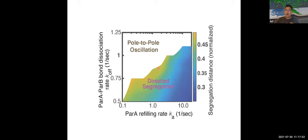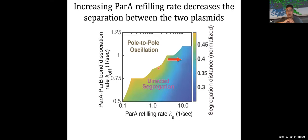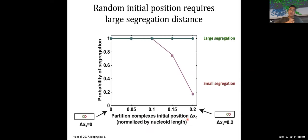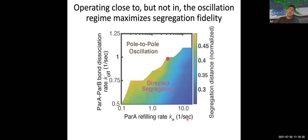Remember, the plasmid is constantly on the move and can replicate anywhere along the nucleoid. So if the replicated plasmids are not initially at mid-cell, a small segregation distance increases the chance that both plasmids end up in the same half of the cell, compromising partition fidelity. Therefore, partition fidelity requires the partition machinery to operate in a very special parameter regime — close to but not in the pole-to-pole oscillation regime.